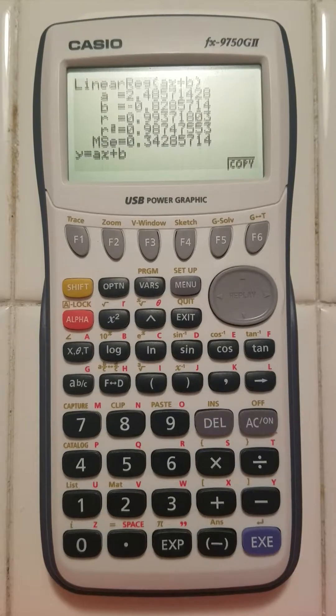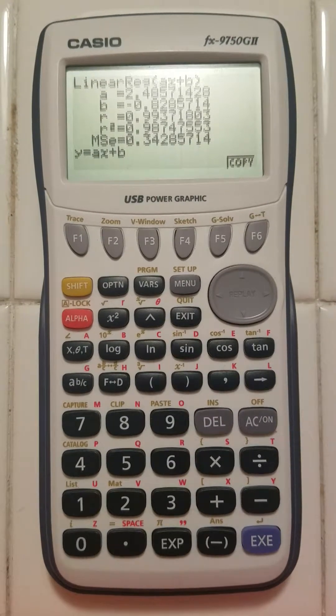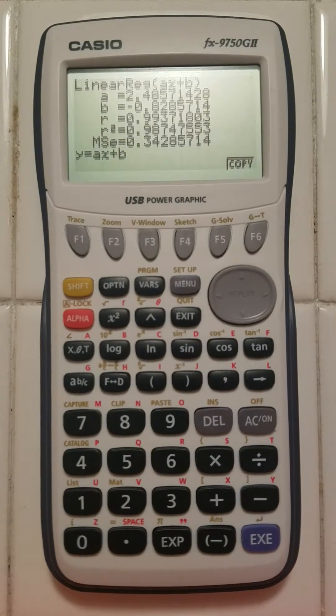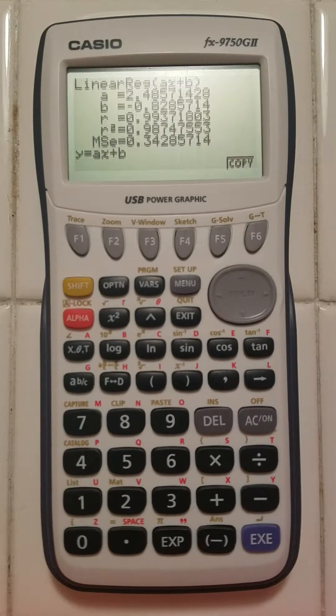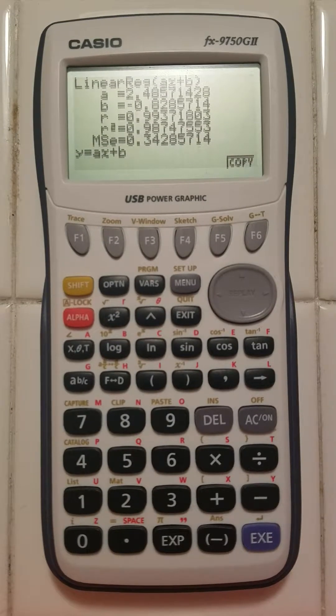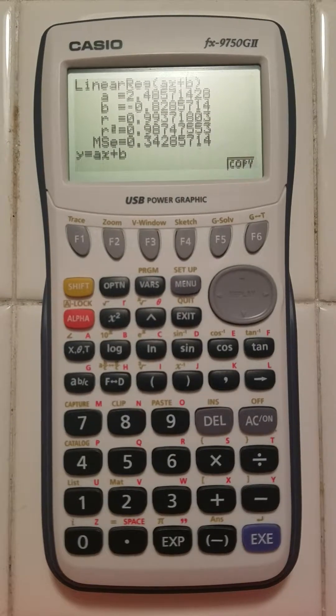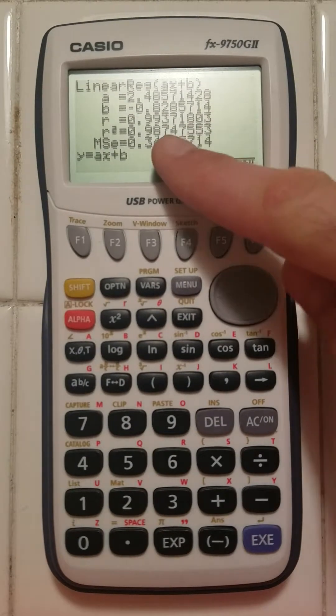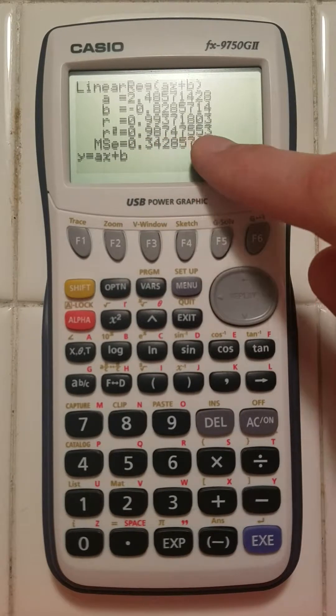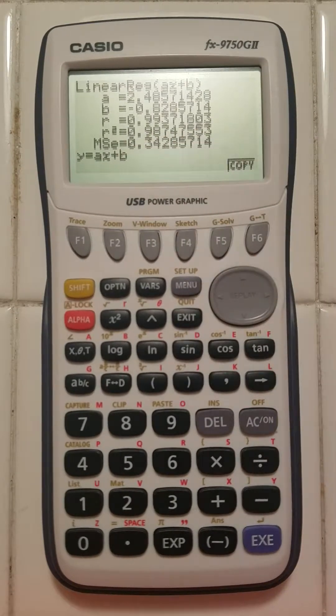And now I've got my linear regression. My slope is 2.485, 2.486 if I round up. My b value or y-intercept is negative 0.828, and I have all of my information there as well as my r-squared value, which determines how well my data is fit by this line.